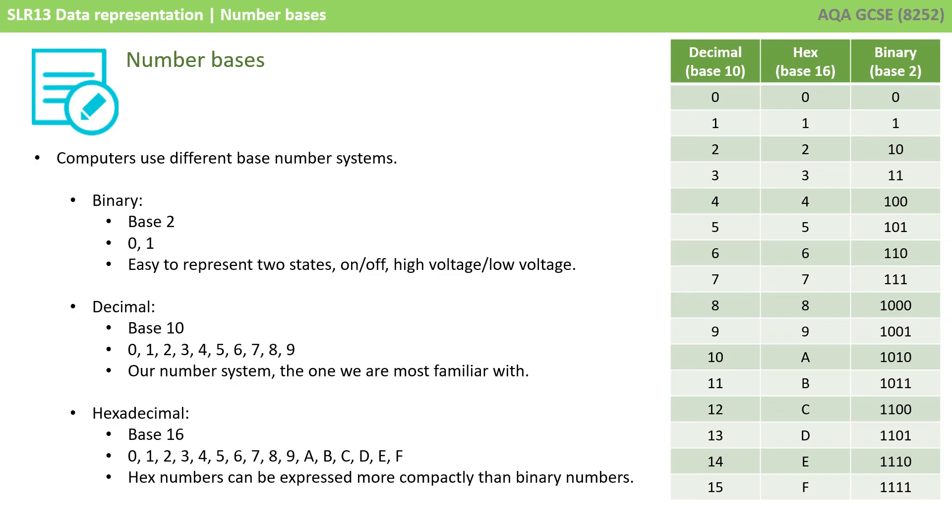So just a quick recap. Computers in the field of computer science use different base number systems. Binary is base 2, the digits 0 and 1. It's easy to represent two states, like on or off, or high or low voltage, and this is ideal for computer science and electronics-based systems. Our number system is known as decimal base 10, with unique digits 0 through 9. And finally, hexadecimal base 16, with 16 unique digits, 0 through 9, followed by A through F. Hex numbers can be expressed more compactly than binary numbers, and this is one of the reasons we use it.